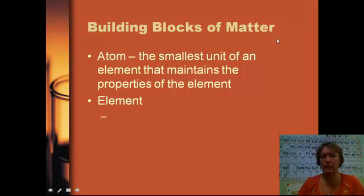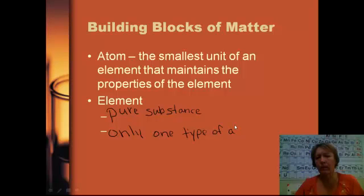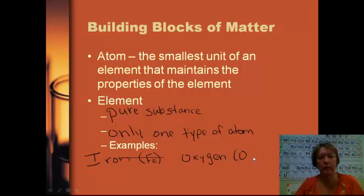An element is a couple of things we need to define. An element is a pure substance, and an element is made up of only one type of atom. So there's only one type of atom found in an element. Some examples of elements — things we're probably familiar with: iron, abbreviated Fe in chemistry shorthand. Oxygen, the essential element in the air we breathe, is abbreviated just O. Hydrogen is another example of an element.